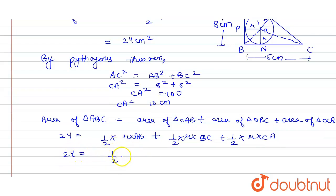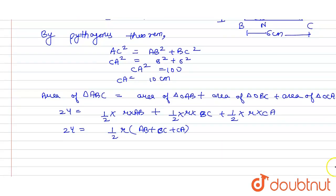After that, solving for r, we will get r = (2 × 24)/(AB + BC + CA). That is, r = (2 × 24)/(AB + BC + CA).